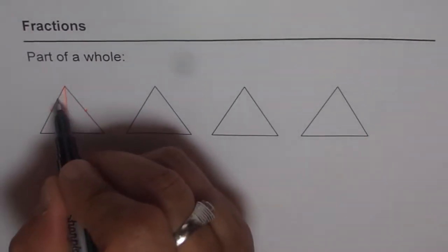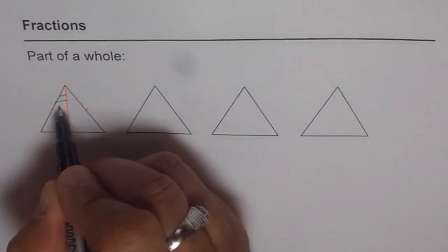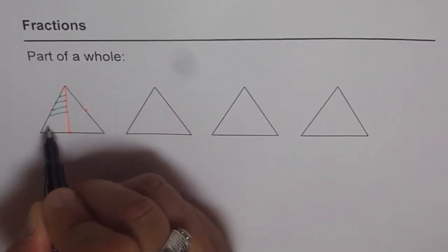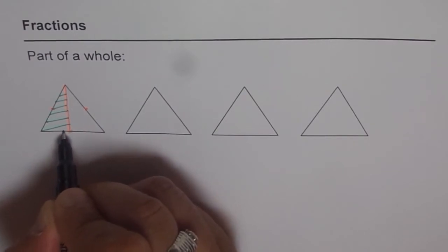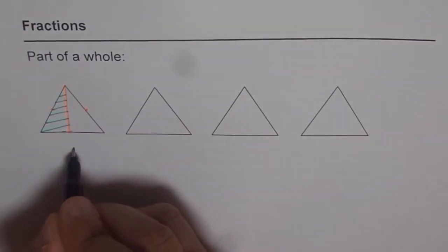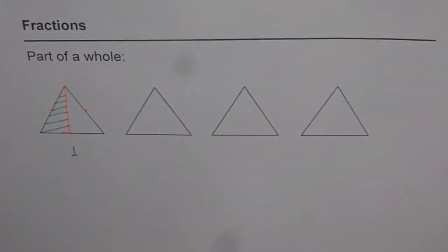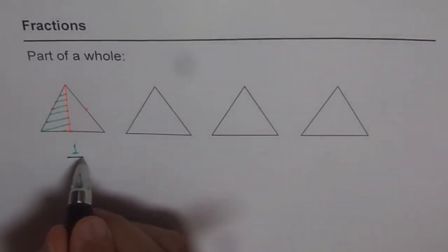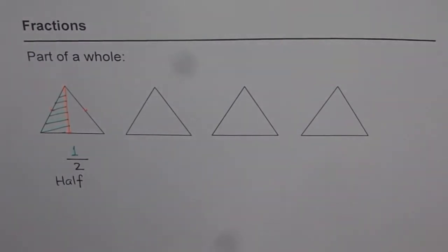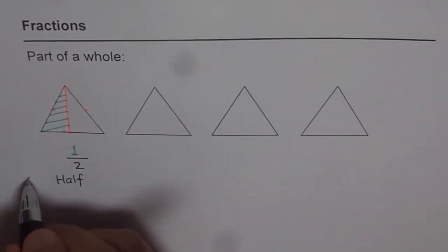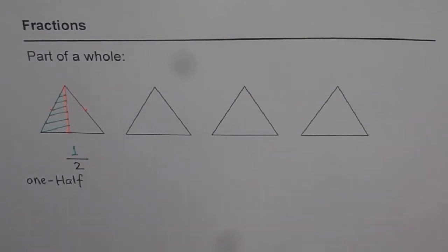And if I shade one of them — let's say this one — then what portion have I shaded? I have shaded one out of two, and that is half. We can say one half. Let me write one half here.